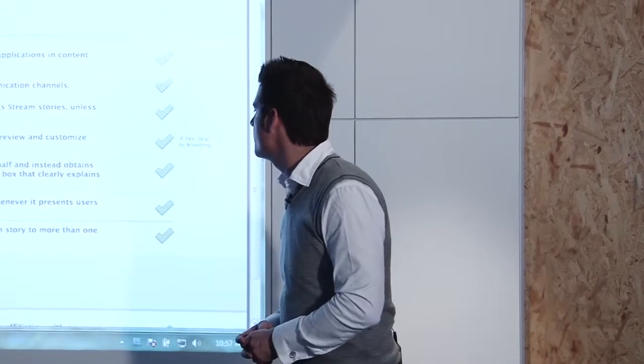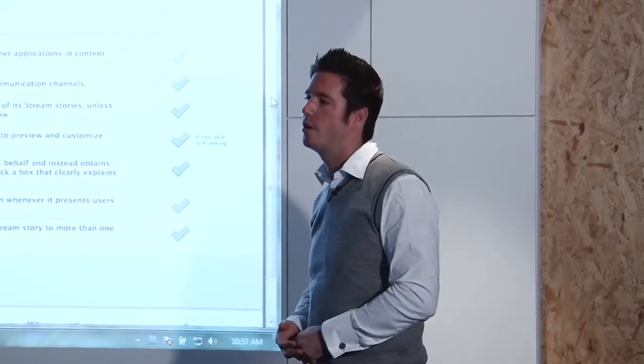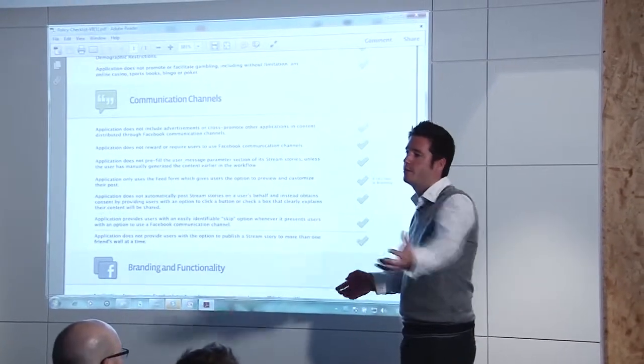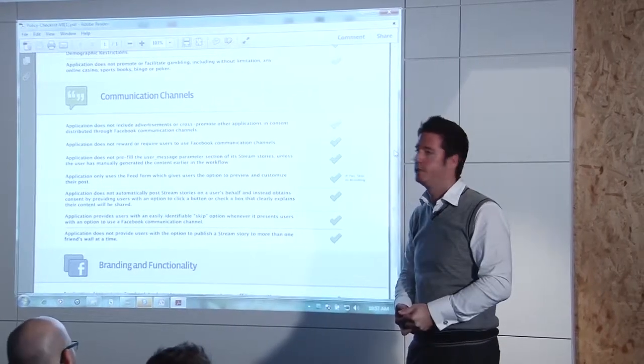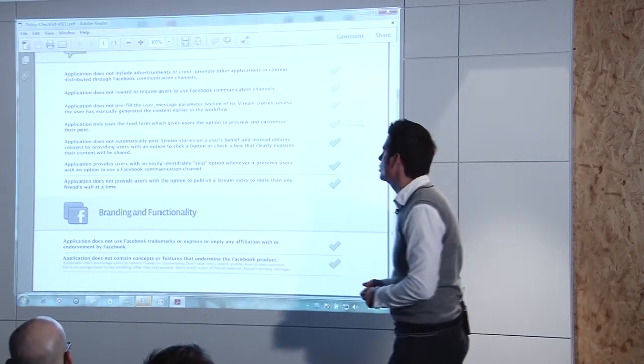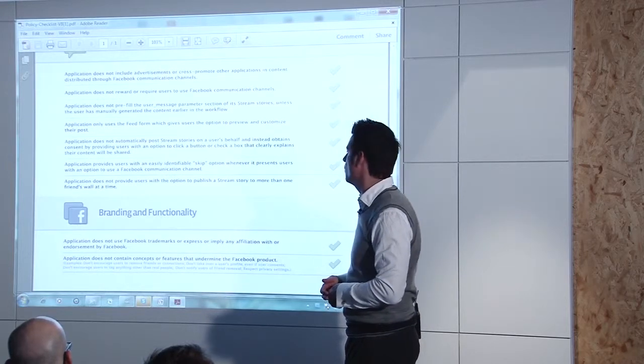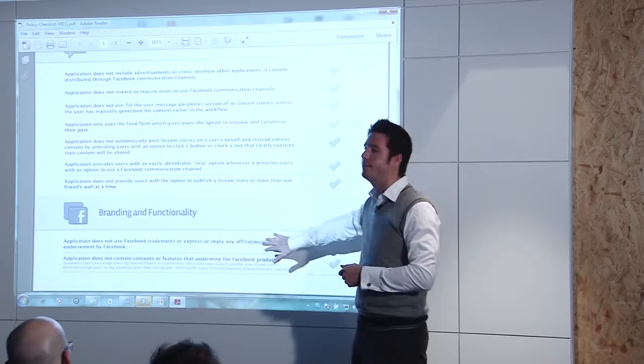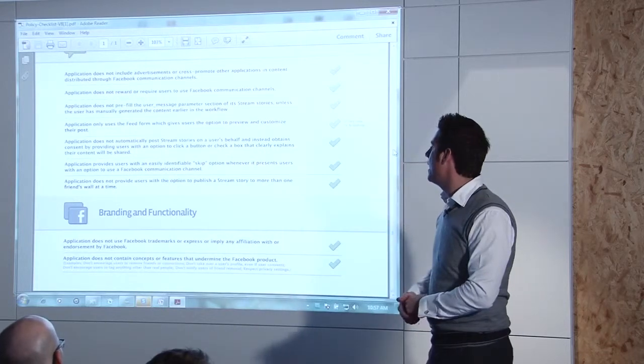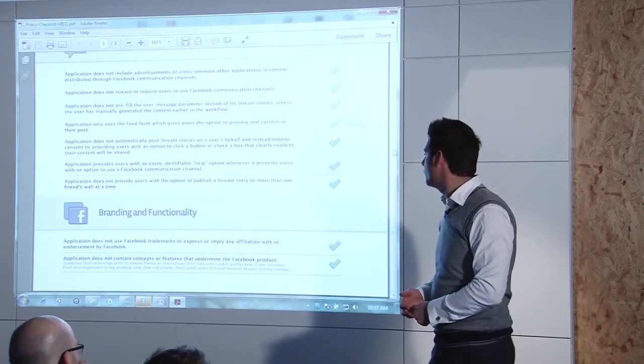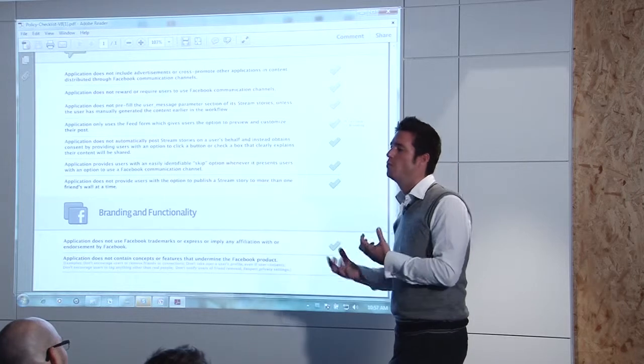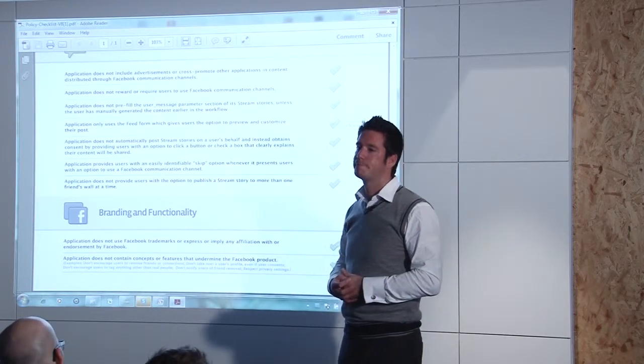With regards to the logistics of competitions, as long as there's full disclosure of everything that a person is going to be getting themselves into in terms of entering a competition. Those are really the most important things. Application does not provide users the option to publish a stream story to more than one friend wall at a time. So that's what I was talking about earlier. Instead of publishing to only one person at a time, rather send requests to as many people to get them to use the application. And then just last two, application does not use Facebook's trademark or express or imply any affiliation with or endorsement by Facebook. So that will be covered by the disclaimer. But also you can't use Facebook's logos inside the application. Application does not contain concepts or features that undermine the Facebook product. So use of the logo in other forms or manipulate it in any way.